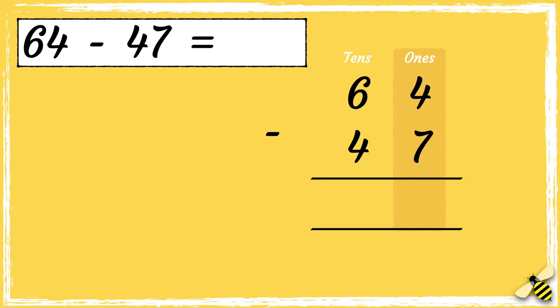Now that we're set up, we can subtract the digits in each column starting from the right. We can't subtract seven from four, so we need to borrow a ten from the tens column. If we borrow a ten, six tens becomes five tens. So now we have fourteen take away seven, which is seven. Then we do five take away four, which is one. So the answer is 17.